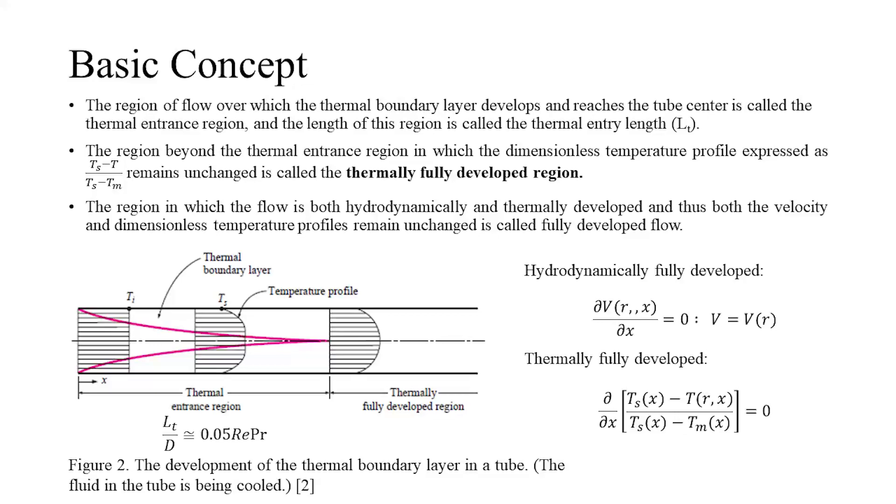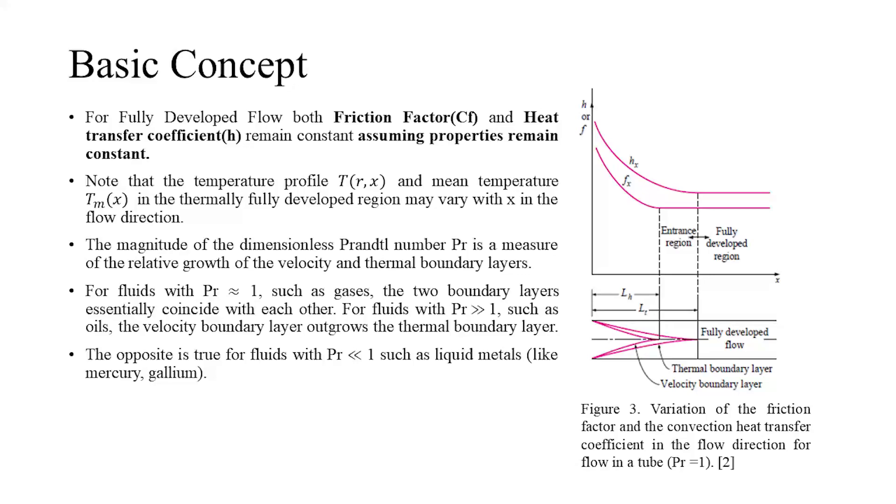It is characterized by the flow occurring after the thermal entry length is passed by the fluid. The thermal entry length is approximately equal to the product of the diameter of the pipe, its Reynolds number and Prandtl number of the fluid divided by 20. A thermally fully developed flow is identified when the non-dimensionalized temperature profile remains unchanged. In our case of convective heat transfer through pipe flow will be referred to as fully developed only when both the hydrodynamic and thermal regions of the flow are fully developed, similar to hydrodynamically fully developed flow where there isn't change in the friction factor. For a thermally developed flow, the heat transfer coefficient does not change, assuming the fluid properties remain constant.